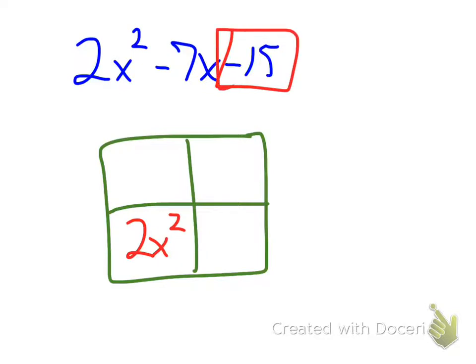My last term, which is called the constant term, does not have any x's. That always went right here. So that's my minus 15.